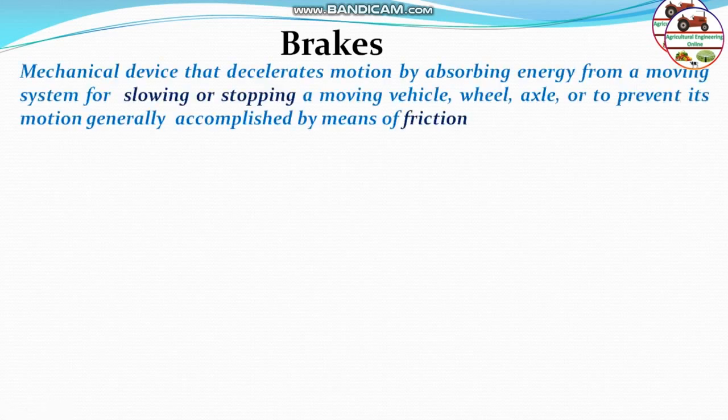Moving on to brakes: a brake is a mechanical device that decelerates motion by absorbing energy from a moving system, for slowing or stopping a moving vehicle or to prevent its motion, generally accomplished by means of friction. Brakes are classified into different types; mostly used brakes in tractors or power tillers are internal expanding, external contracting, or band brakes.